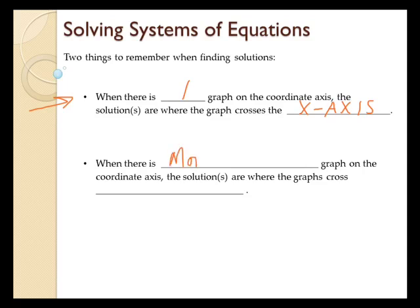When there is more than one graph on the coordinate axis, the solutions are where the graphs cross each other. So if you have more than one graph — that could be multiple parabolas or quadratic equations, multiple lines — wherever they cross, that's the solution to those equations.